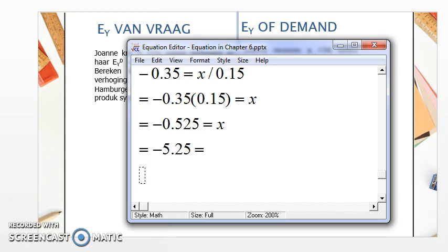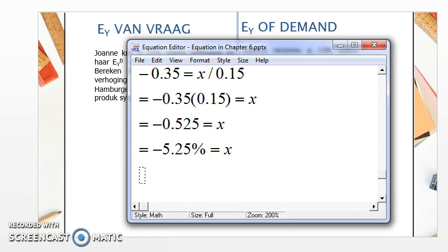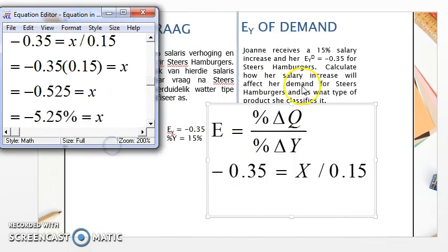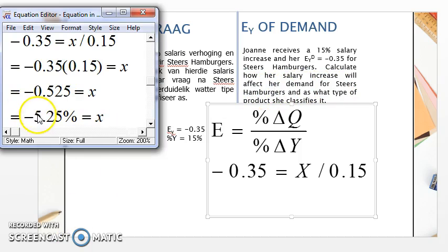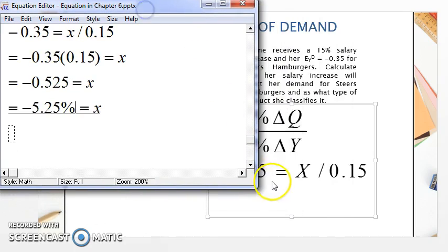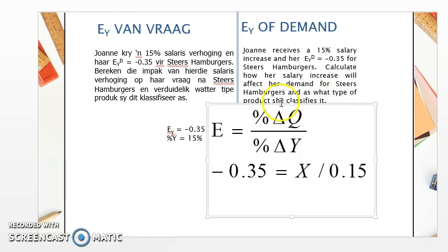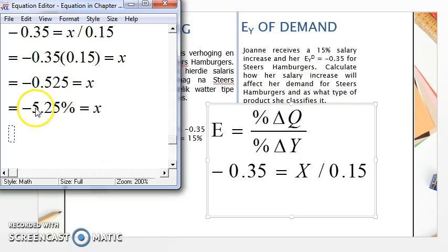So x equals minus 5.25%, meaning there will be a reduction of 5.25% in the purchasing of Steers hamburgers when income increases by 15%. The demand for Steers hamburgers decreases by 5.25%. Because demand decreases as income increases, a Steers hamburger is classified as an inferior good.